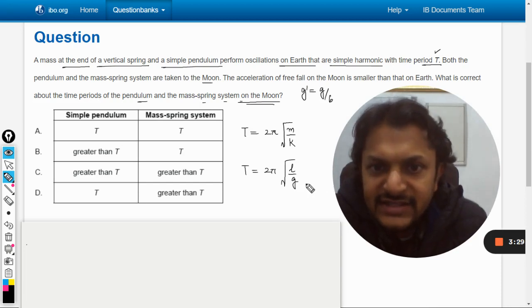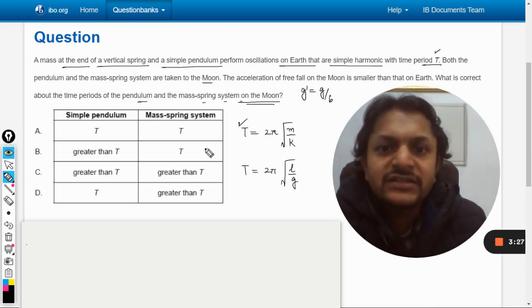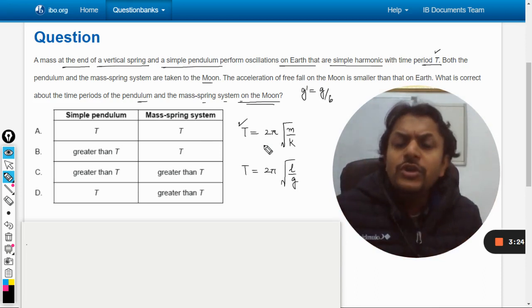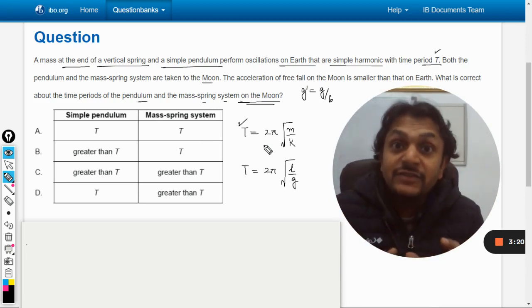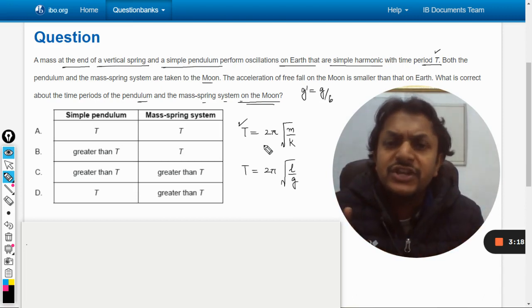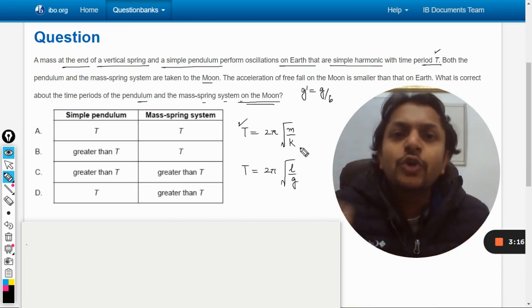According to this, we can see that as far as the spring-mass system is concerned, whether it is moon or whether it is Earth, the mass of the body is not going to change, as well as the spring constant is not going to change. It means neither m is changing nor k, so time period for the spring-mass system will be the same.